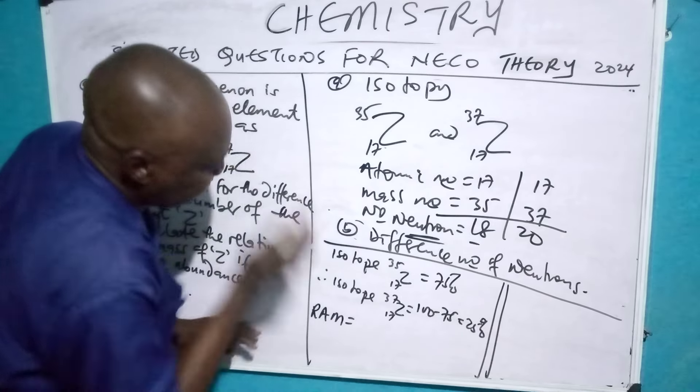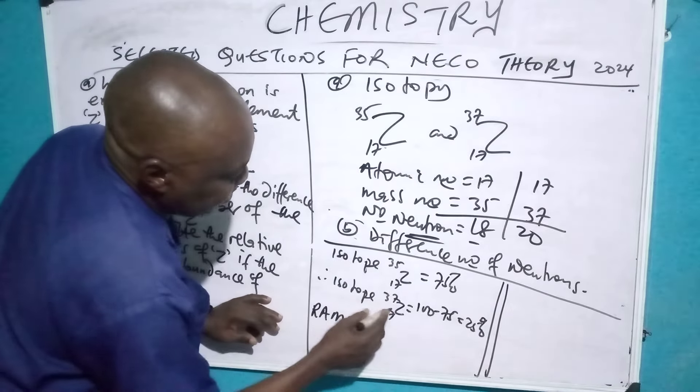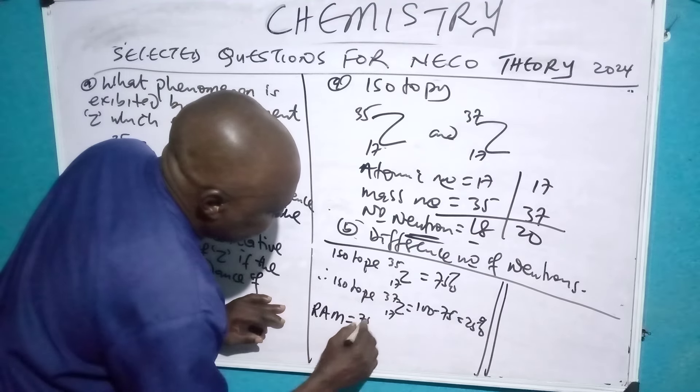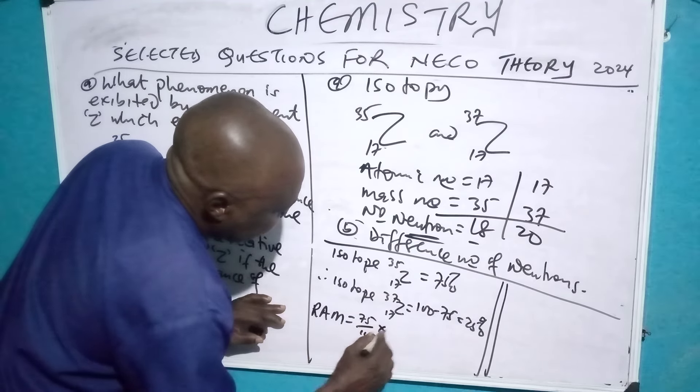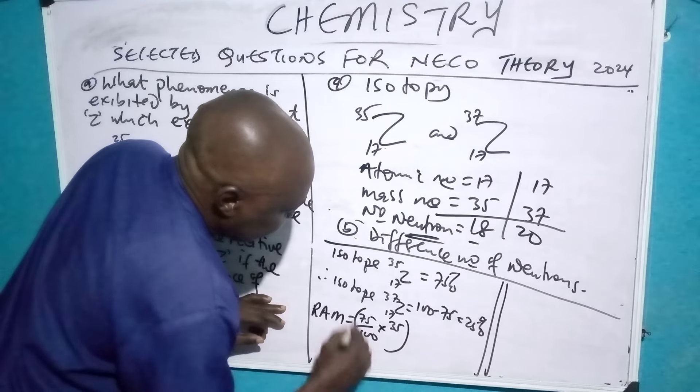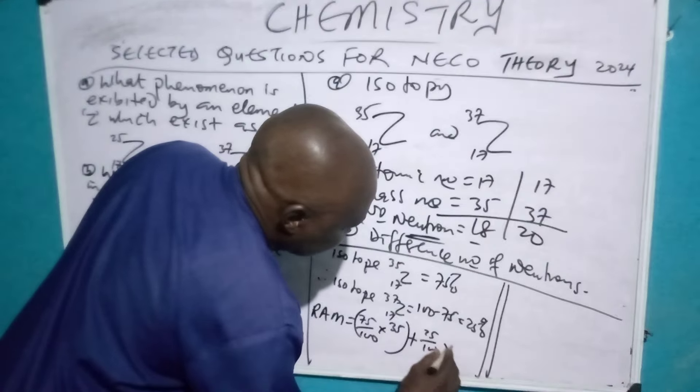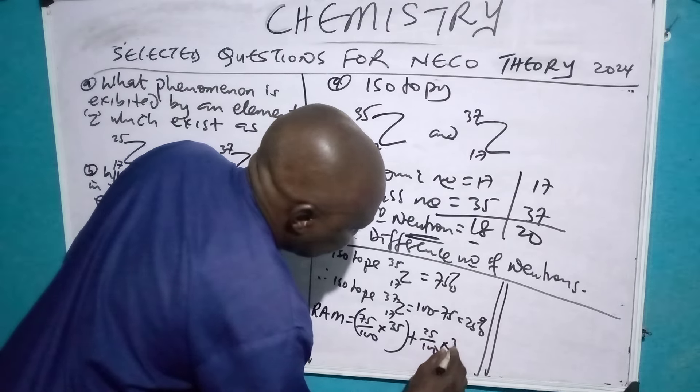You see, for this, 35 over 100 times 35. You see it, plus 65 over 100 times 37.